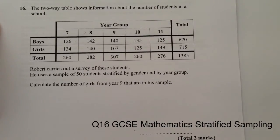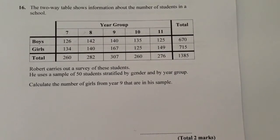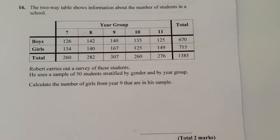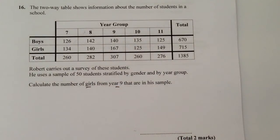This is question 16 in the GCSE mathematics stratified sampling practice questions. These types of questions sometimes tend to look really quite complicated — there's an awful lot of numbers within this particular question. However, the actual information we're interested in is the number of girls from year 9 who are in the sample.